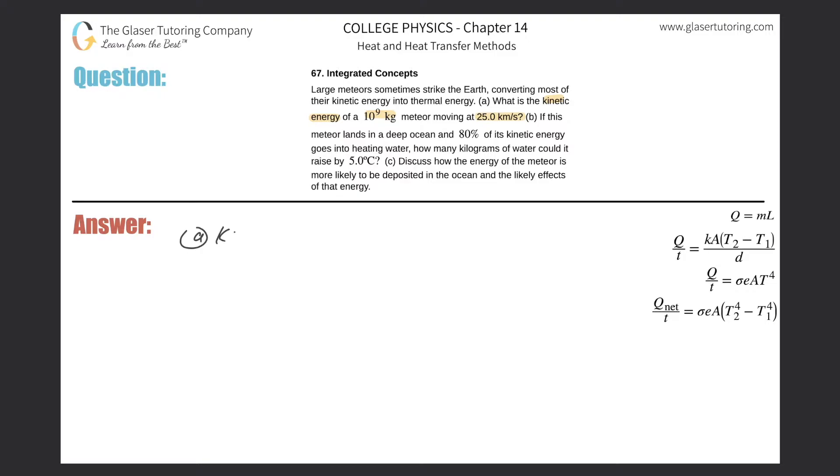So letter A, kinetic energy. We know the formula: one half mv squared. So this is fairly straightforward. Just plug in the values. The mass has to be in kilograms, which it is. That's 10 raised to the 9. That's basically a billion. Multiply it by the velocity.